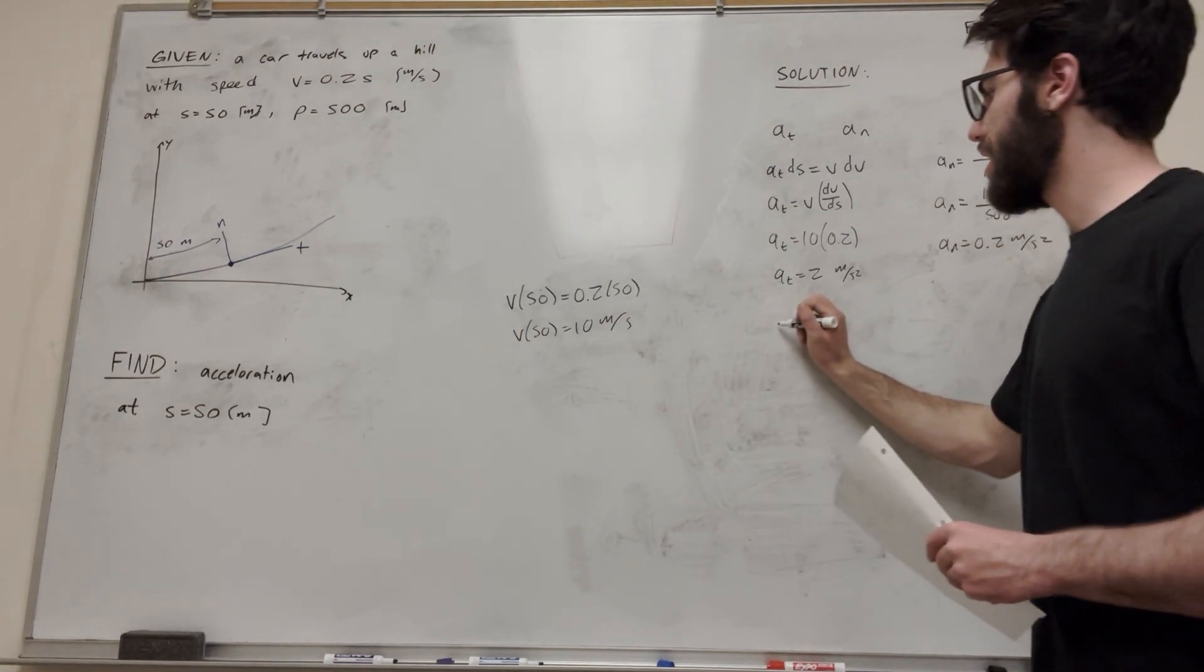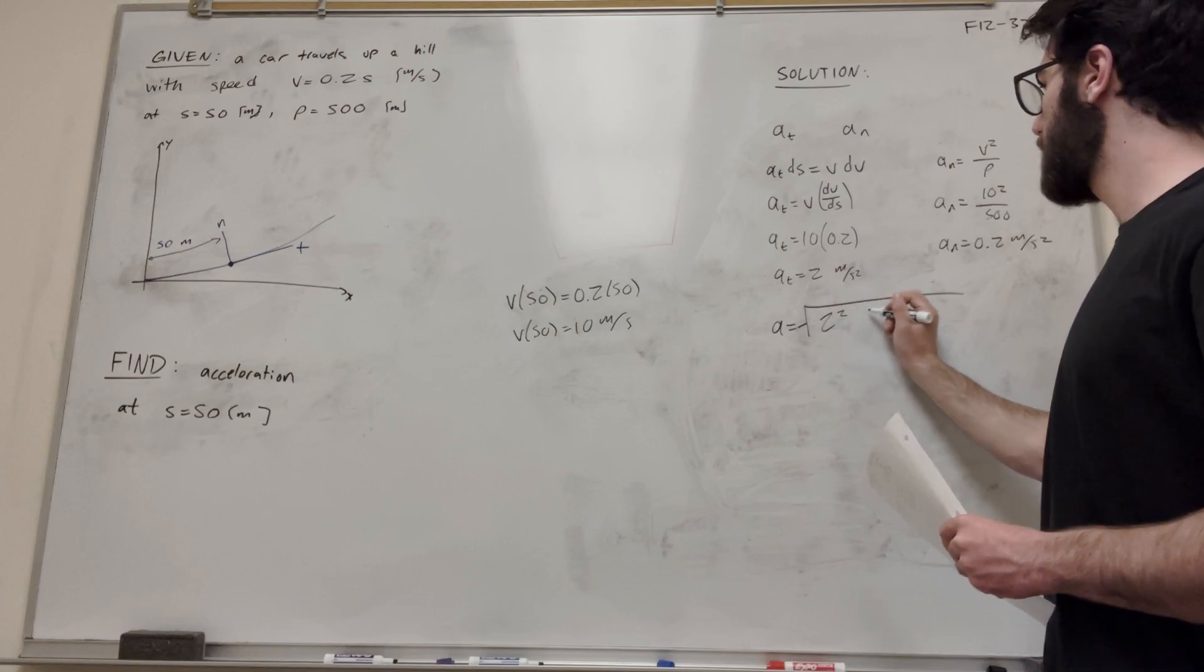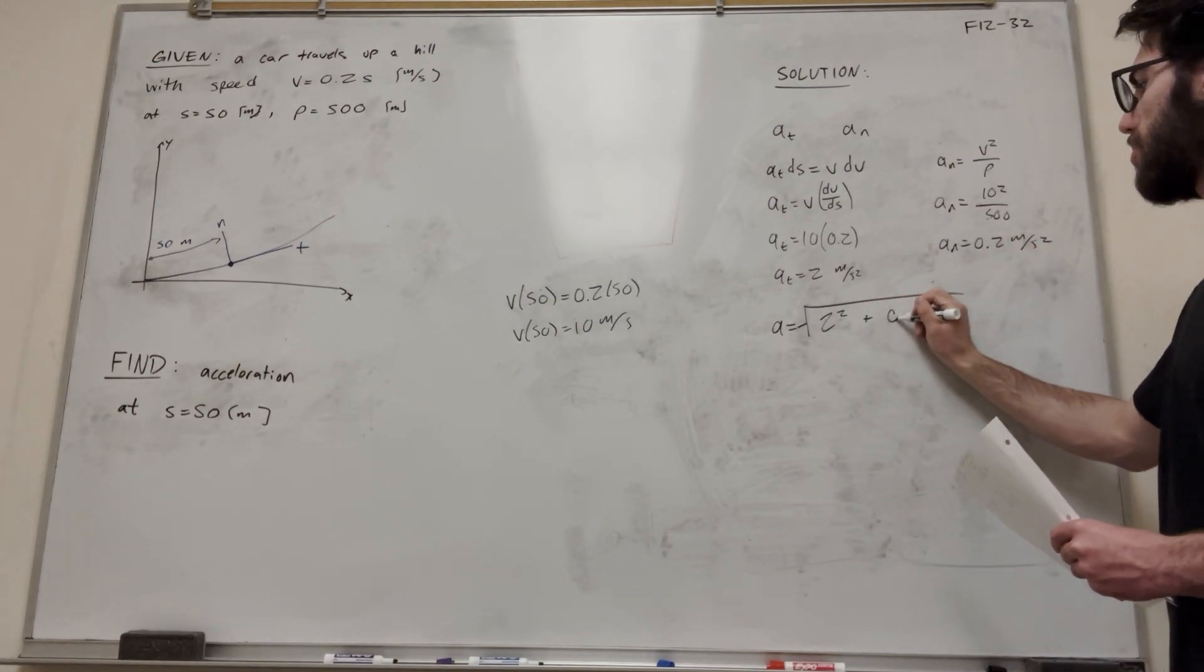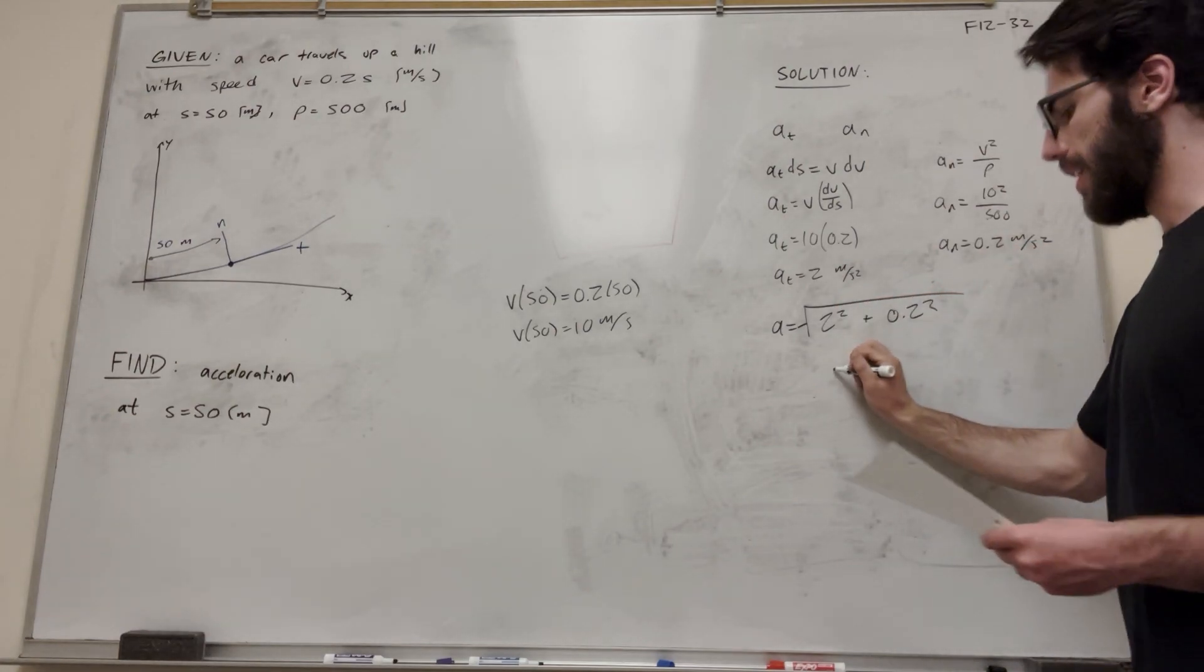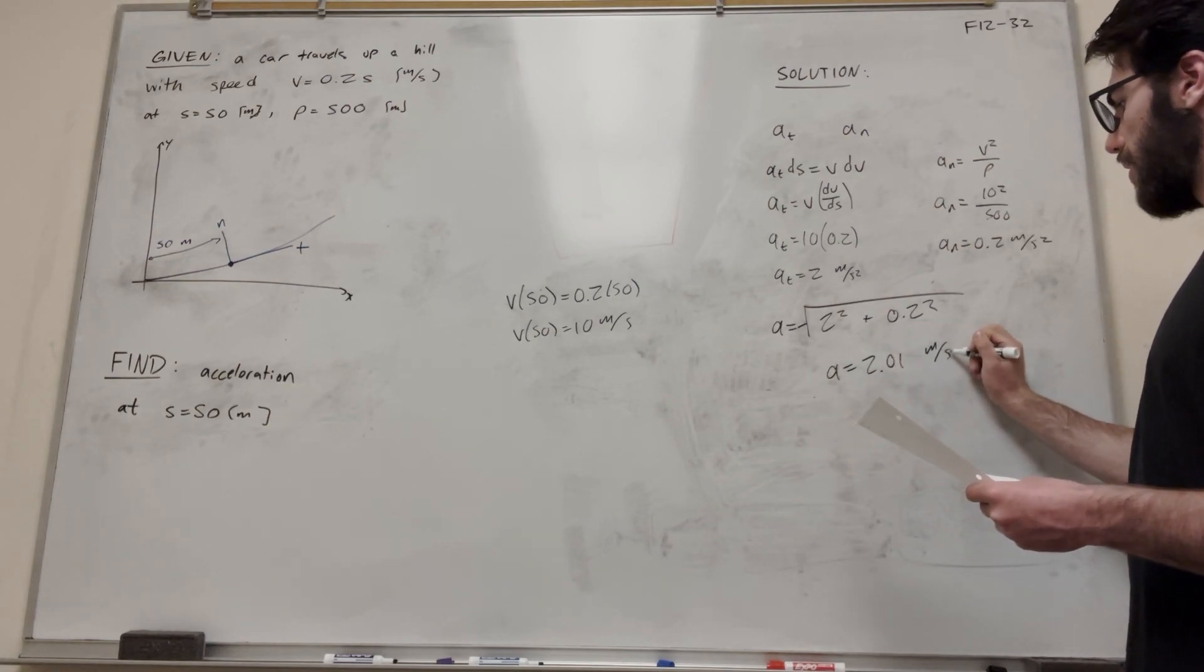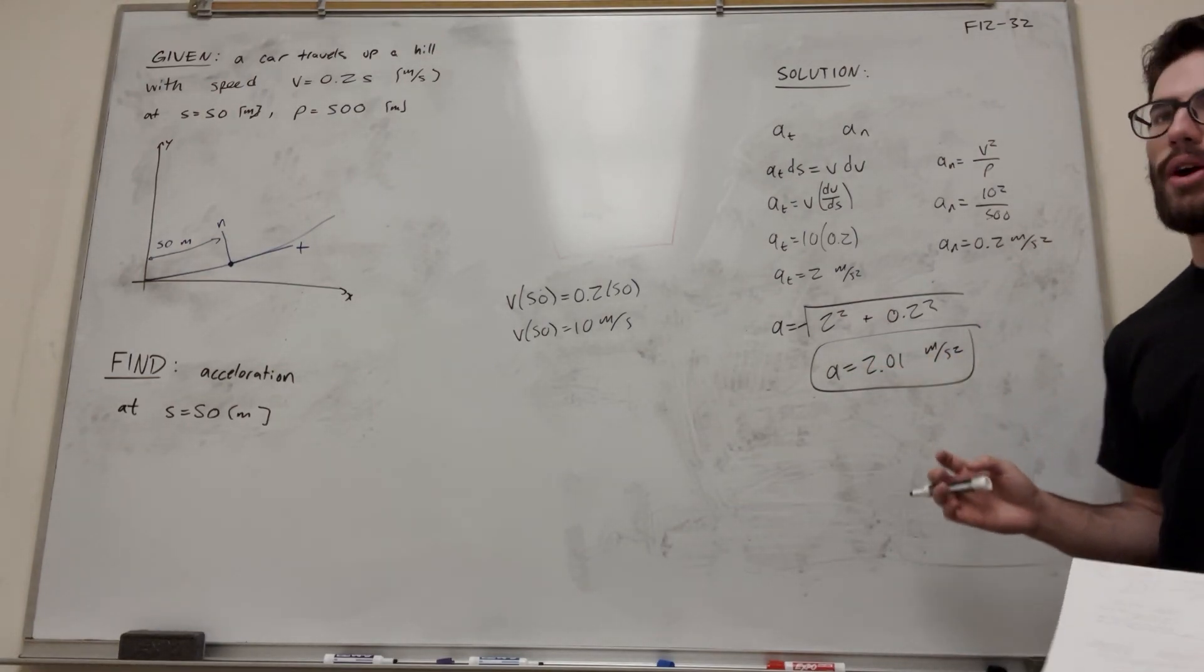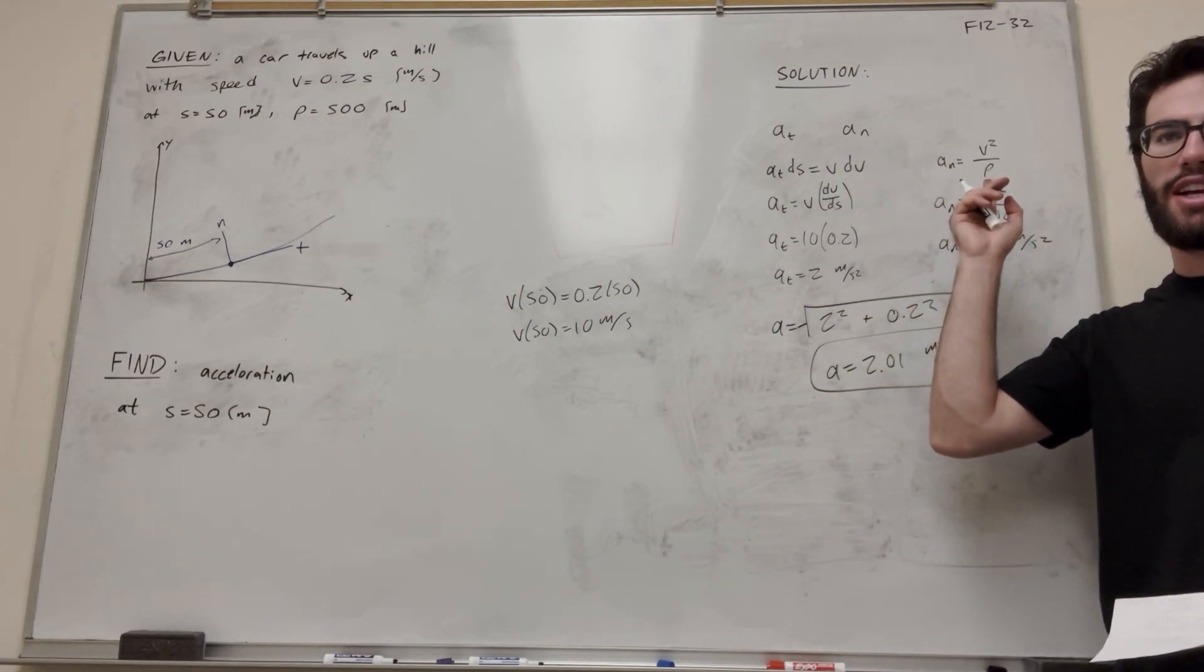So if you want to find the magnitude of the acceleration now, we're just going to take the square root of acceleration tangent squared plus the acceleration normal squared, 0.2 squared. And this is going to give you 2.01 meters per second squared. And that's the solution. So really not that tricky of a question. It's about using your equations correctly and setting it up correctly.